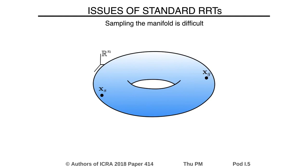On one hand, sampling of the manifold becomes difficult because in general the manifold doesn't admit a global parametrization. We could sample the ambient space, but this would lead to inefficient exploration of the manifold.